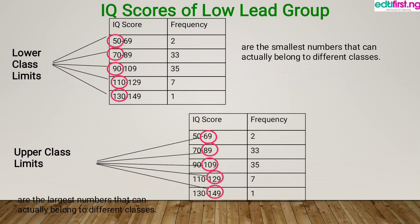On the other side, we have frequency. Frequency describes the number of values in a data set that fall into each interval — for example, from the value of 50 to 69. The values that fall between 50 to 69 is 2. The values that fall between 70 to 89 is 33, and so on and so forth.